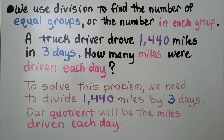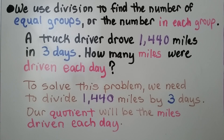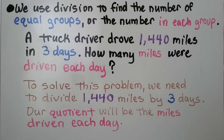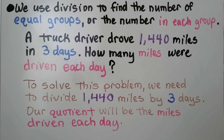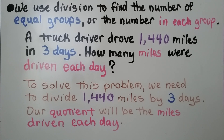We use division to find the number of equal groups or the number in each group. A truck driver drove 1,440 miles in 3 days. How many miles were driven each day? To solve this problem, we need to divide 1,440 miles by 3 days. Our quotient will be the miles driven each day.